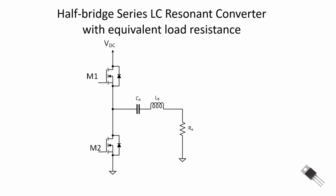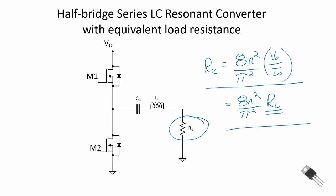When we do our analysis, we would like to reflect the load back to an equivalent resistance. The equivalent resistance R sub E is equal to 8 N squared divided by pi squared, all times V out over I out. In some publications it's written as 8 N squared over pi squared times R L, where R L is the output voltage divided by the output current. And we will derive this equation in later videos. The equivalent resistance allows us to further analyze our resonant circuit.